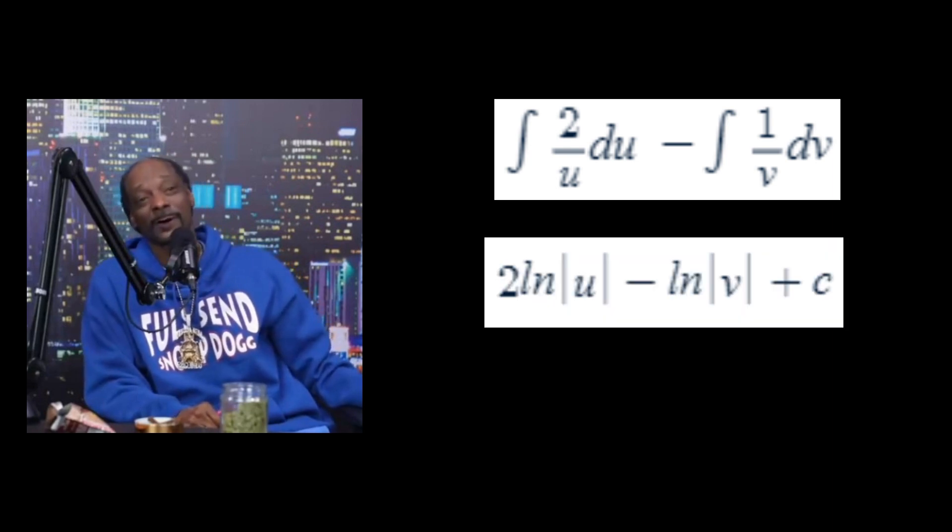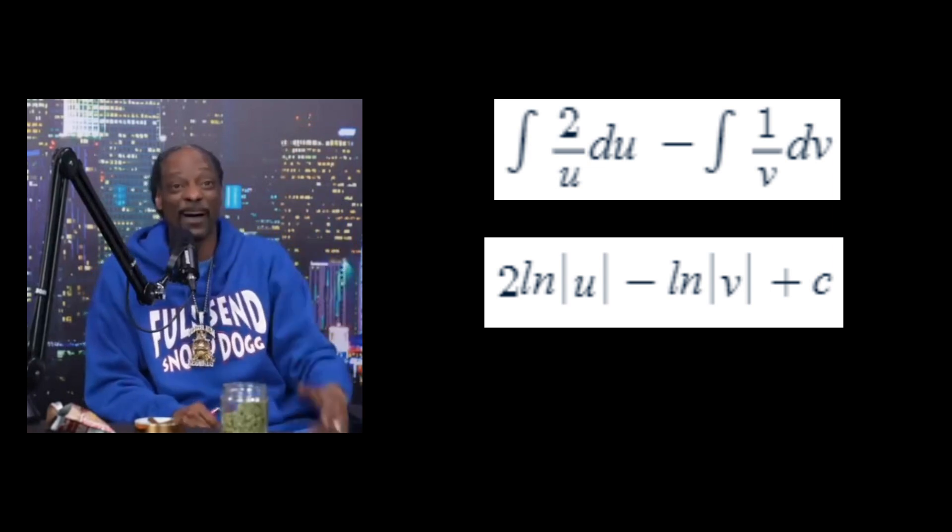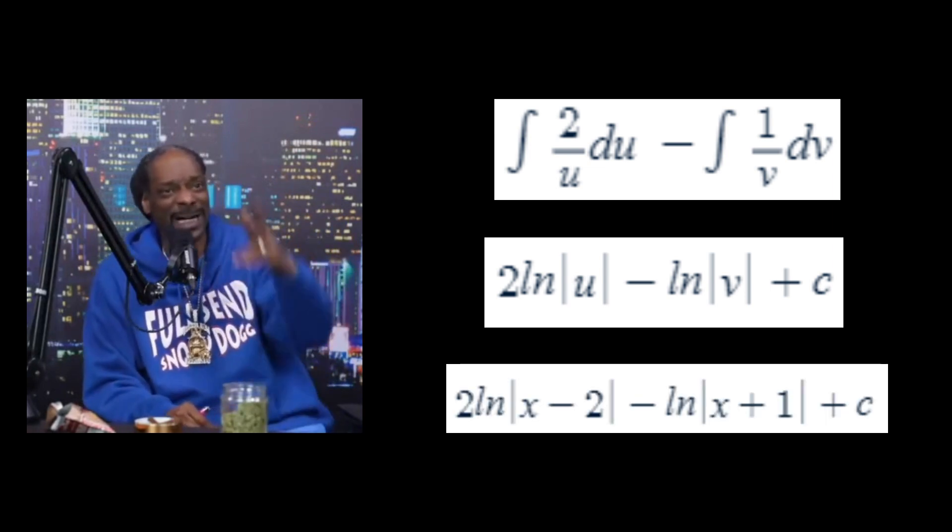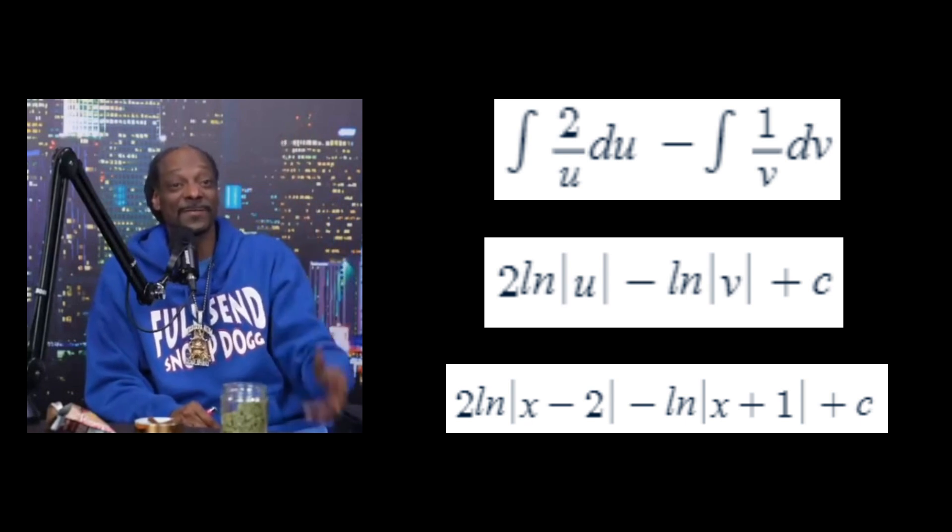Integrating, we get 2 times the natural log of u minus 1 times the natural log of v plus c. Substituting our u and v values back in, we get 2 ln of x minus 2 minus ln of x plus 1 plus c.